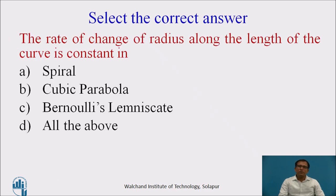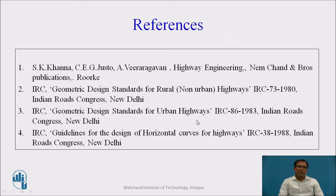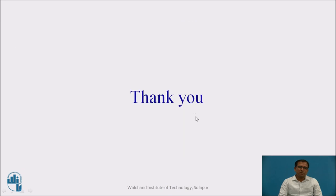Now, let us pause the video and try to select the correct answer: in which type of curve is the rate of change of radius constant — whether it is spiral, cubic parabola, or Bernoulli's lemniscate, or all of the above? The correct answer is spiral. In the spiral, the rate of change of radius and centrifugal acceleration is uniformly introduced. These are the references I have used for this presentation. Thank you.